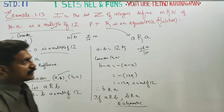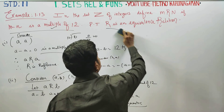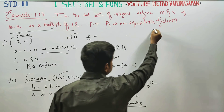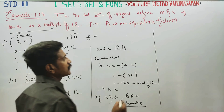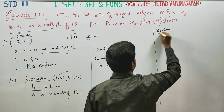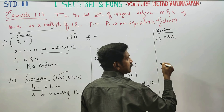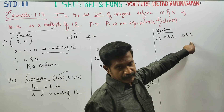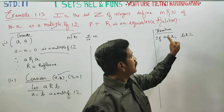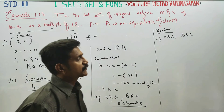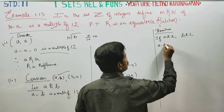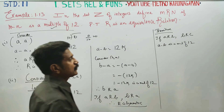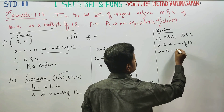The last one is transitive. If a is related to b and b is related to c, we have to prove that a is related to c. If a is related to b, then a minus b is a multiple of 12 — a minus b is equal to 12L.